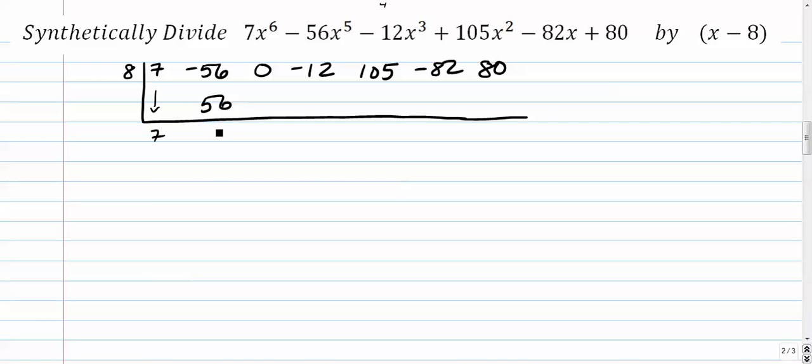8 times 7 is 56. Add those together. 8 times 0 is 0. Add those together. 8 times 0 is 0. Add those together. 8 times negative 12 is negative 96. Add those together. You get 9.